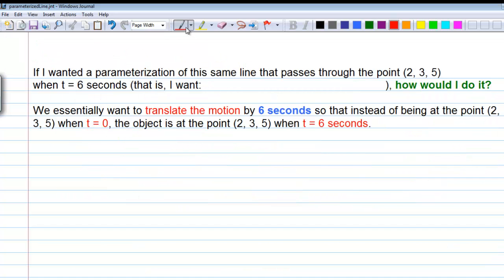If I wanted a parameterization of the same line that passes through the point 2, 3, 5 when t equals 6 seconds, that is, I want r of 6 to equal 2i plus 3j plus 5k, how would we do that? We essentially want to translate the motion by 6 seconds, so that instead of being at the point 2, 3, 5 when t equals 0, the object is at the point 2, 3, 5 when t equals 6 seconds.